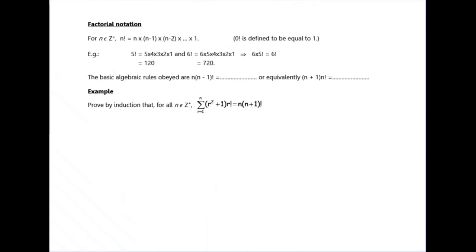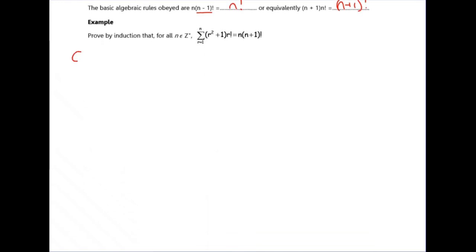Finally, sometimes you'll get asked about factorial notation. This is something you've met in single maths in the binomial expansion. Factorial notation uses an exclamation mark — for example, 5 factorial means 5 × 4 × 3 × 2 × 1. A key thing to notice about factorials is they're included within each other: 6 factorial contains 5 factorial, so you can write 6 factorial as 6 times 5 factorial. In general, n factorial times (n+1) equals (n+1) factorial — this is a useful fact we'll use in the next question.